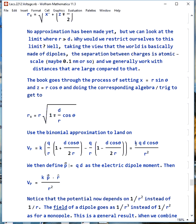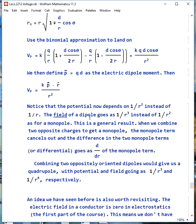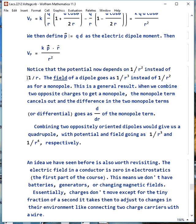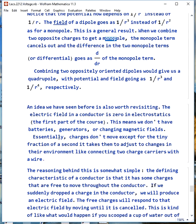And what we end up with is kqd cosine theta over r squared. We can define an electric dipole moment, p, as q times d, and then we can write the potential as kp dot r hat over r squared. Now, notice the potential depends on 1 over r squared here instead of 1 over r. The field of a dipole we've already seen goes as 1 over r cubed instead of 1 over r squared. This is a general kind of result. If we combine two opposite charges to get a dipole, the monopole term cancels out, and the difference in the two monopole terms goes as the derivative of the monopole term, which is the dipole term. Combining two oppositely oriented dipoles would give us a quadrupole, with the potential and field going as 1 over r cubed and 1 over r to the fourth.